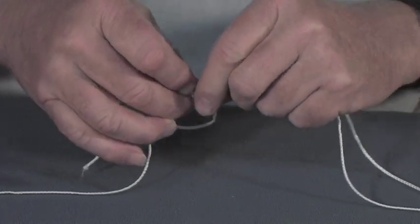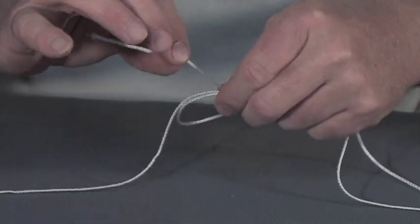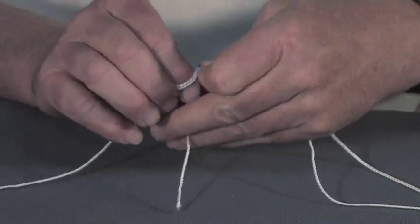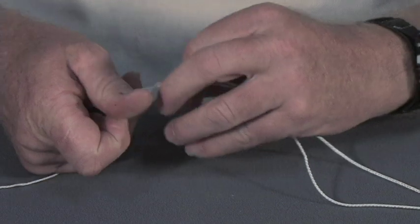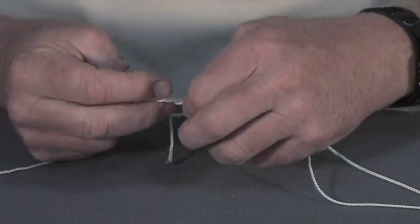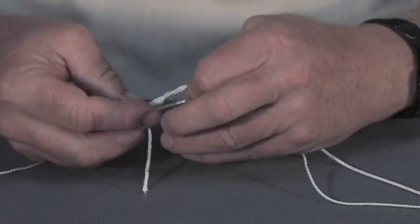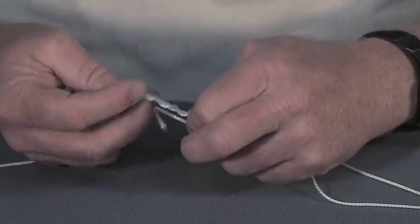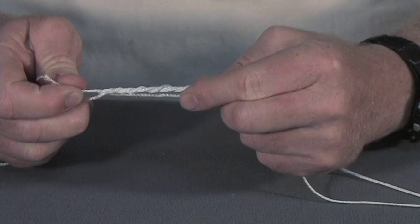Then wrap your tag end through the loop over both your main line and the loop about four or five times, and then pull on both ends.